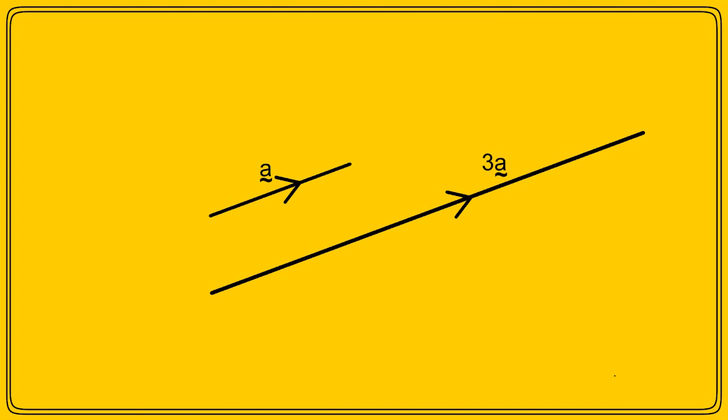Now, I can put this new vector wherever I like, because all vectors that are the same length and point in the same direction are the same vector, don't forget. But what happens if the second vector is smaller than the first vector? No problem.